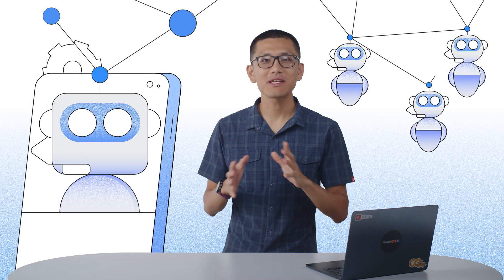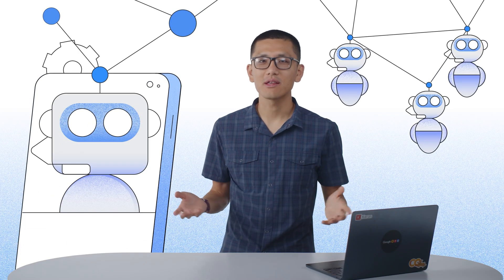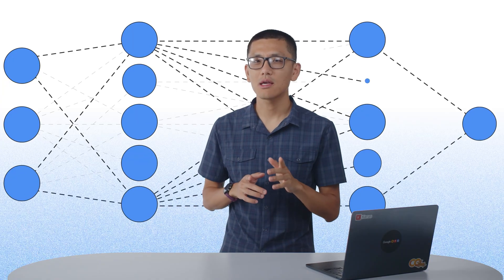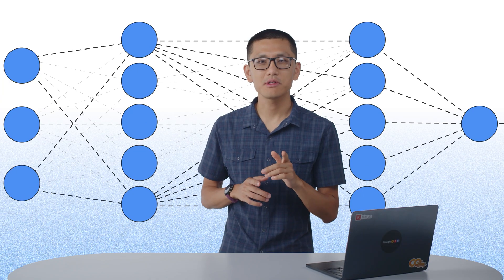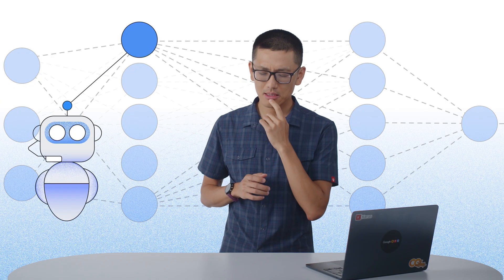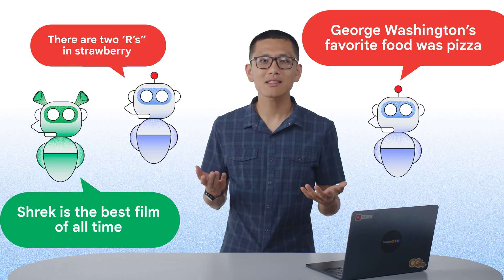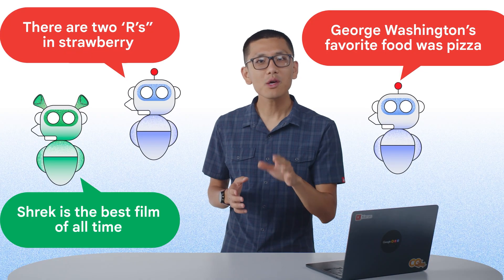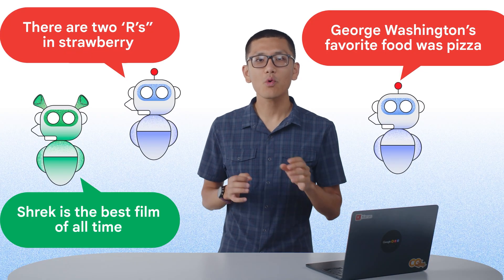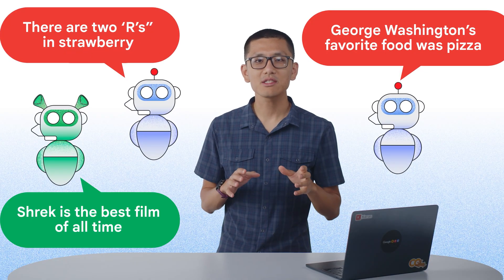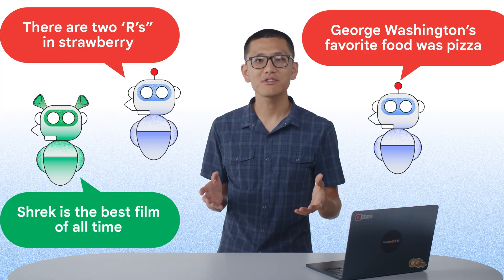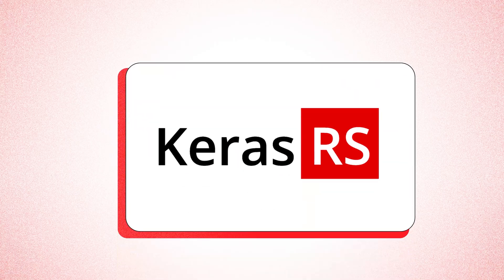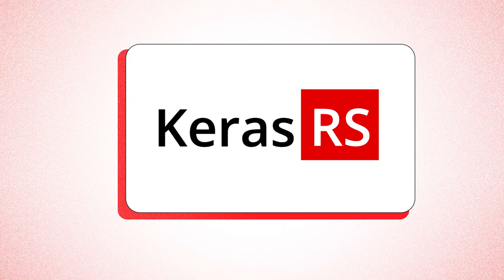Chatbots and large language models seem to be everywhere these days. We could totally use an LLM to build a recommendation system, but hallucinations keep causing issues. So how can we make a high-quality recommendation system without hallucinations? Keras Recommenders has your back.